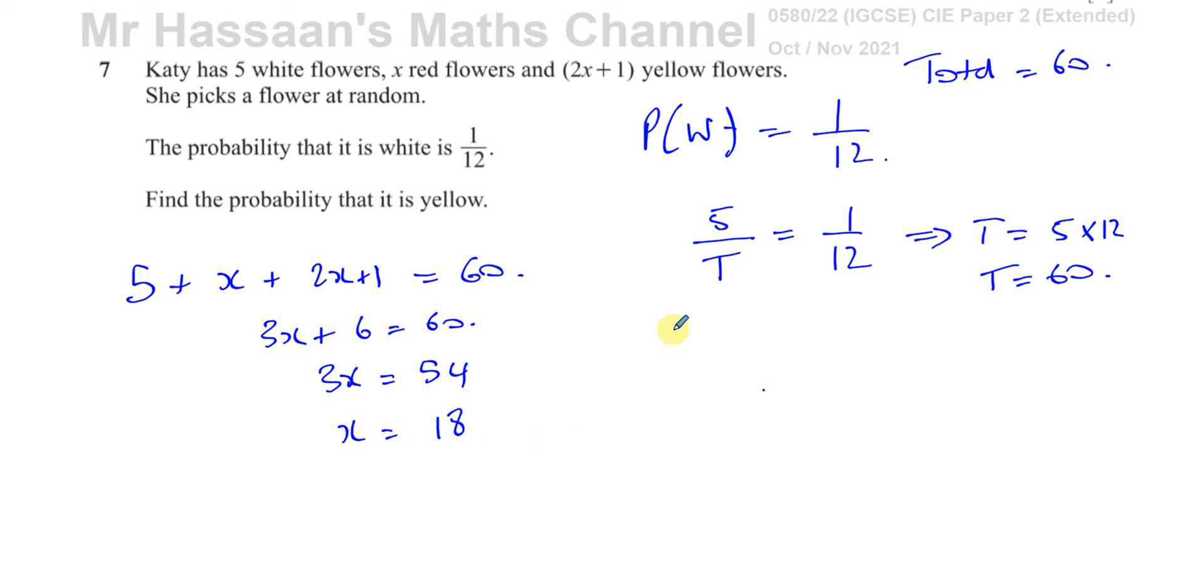We know there's 5 white flowers and 18 red flowers. Yellow flowers is 2 times 18, which is 36 plus 1, which is 37 yellow flowers.